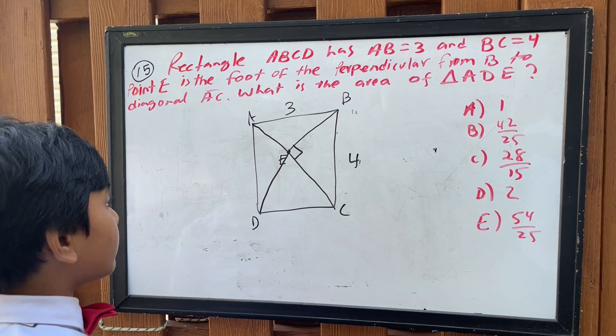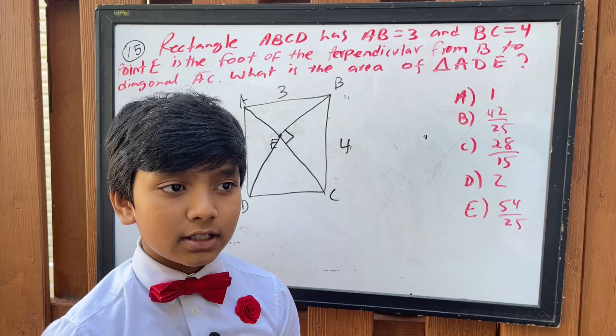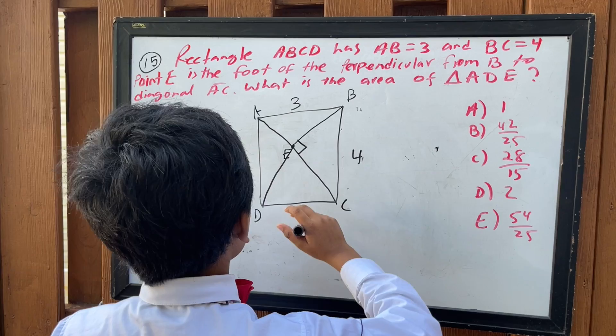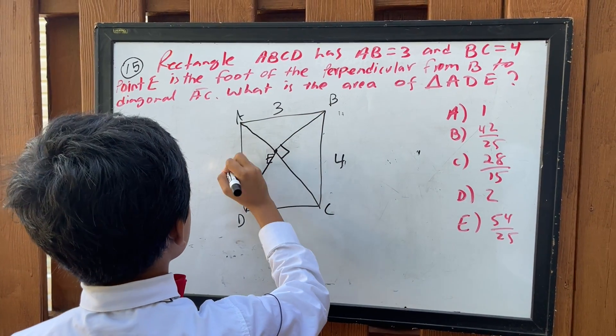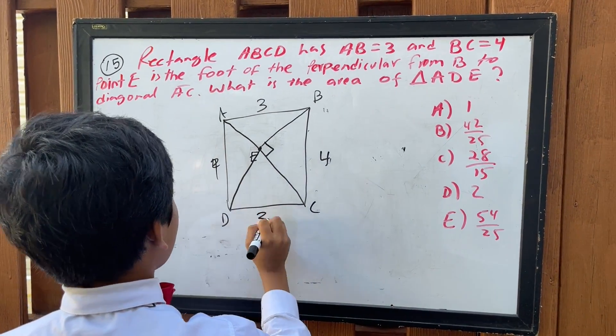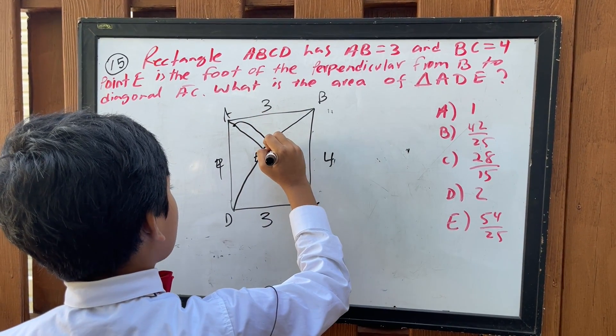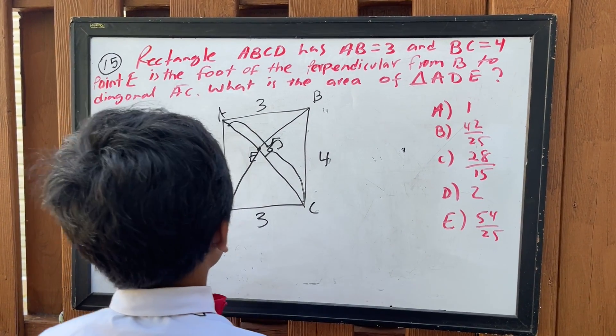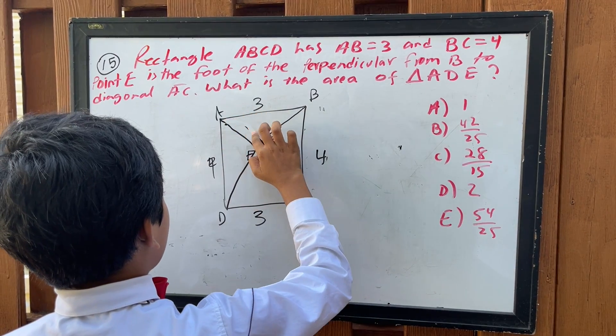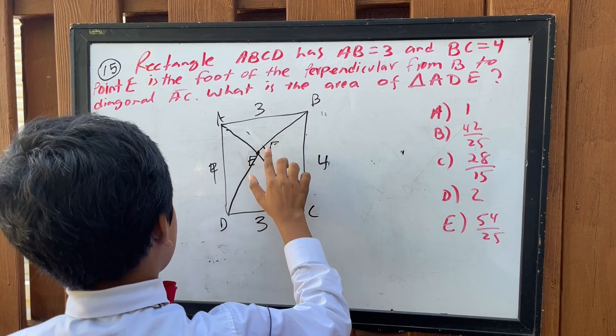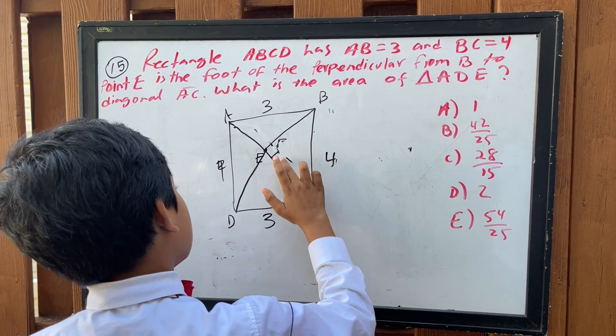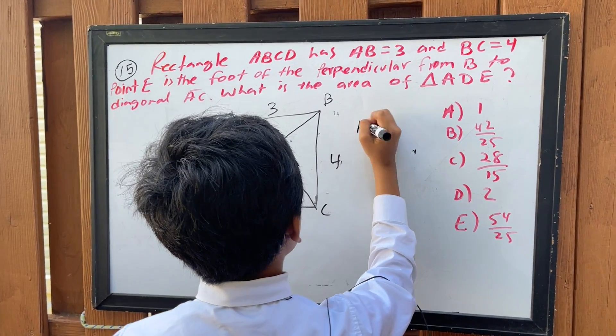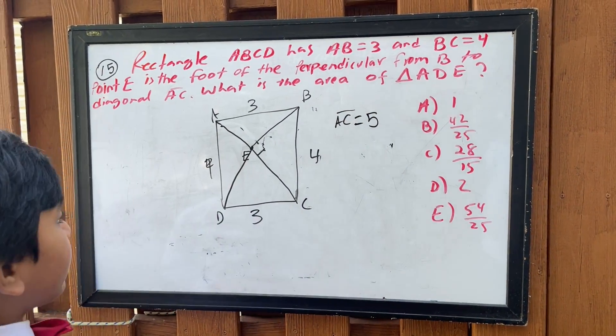Let's get started. Since this is four and this is three, that means that this length is going to be equal to five. So let's keep in our minds that this is five. AC has the length five.